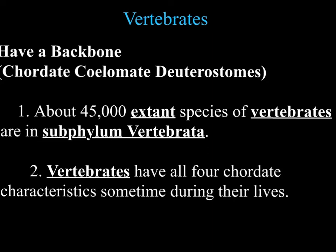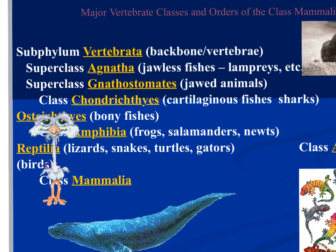This is video 2 on the animal kingdom, looking at the vertebrates. Animal kingdom, phylum Chordata, subphylum Vertebrata — they have a backbone. There are 45,000 different species of vertebrates, and these have all four characteristics of the chordates mentioned in the previous video: the post-anal tail, the pharyngeal gill slits, the dorsal hollow nerve chord, and the notochord.